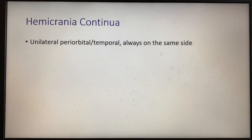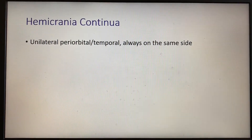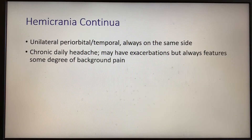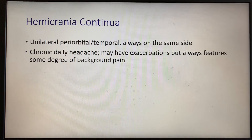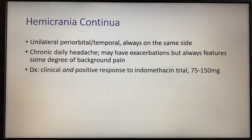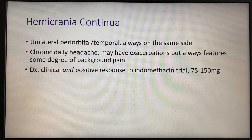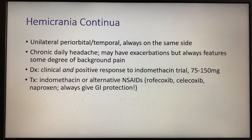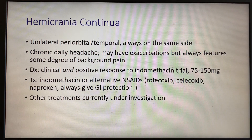Hemicrania continua is very similar to paroxysmal hemicrania — also a unilateral, periorbital, or temporal headache, always on the same side. However, this is a chronic daily headache. Where with paroxysmal hemicrania your symptoms should resolve between flares, hemicrania continua tends to always have some degree of background pain, but it can have exacerbations on top of this background pain. A positive response to indomethacin is also required. Hemicrania continua and paroxysmal hemicrania are the two headaches that require indomethacin as part of their diagnostic criteria. Long-term treatment is very similar, and other treatments are also under investigation.